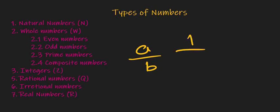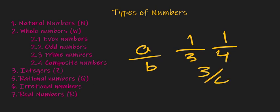For example, 1 divided by 3 is a rational number. 1 divided by 4 is a rational number. 3 divided by 4 is a rational number.